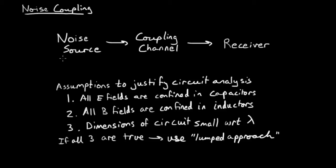First you have a noise source, something that's emitting the source energy, and it's useful to think in terms of energy. Next you have a coupling channel, some mechanism by which that energy, that noise, couples into your circuit. And then finally you have your receiver, which is your circuit of interest, the one you're trying to protect.